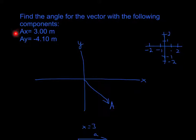So AX, all this means is that the vector A has an X component of 3 and a Y component of negative 4.10.